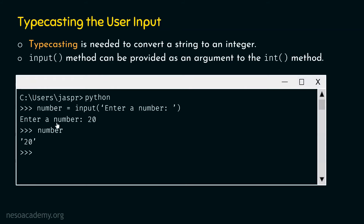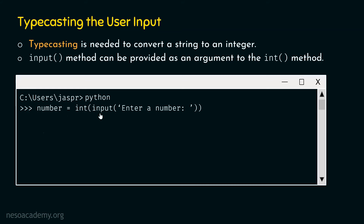Let's see this in action by opening the command prompt. We consider the same example: we were receiving value 20 in the number variable, but it was stored as string 20, not integer 20. We can avoid this by passing input method directly to int method — so our command is: number equal to int(input('enter a number')). As soon as we hit enter, we get 'enter a number'. We type 20 and hit enter, then type number and hit enter — we get 20. Now number is pointing to integer 20, not a string, because the value is not wrapped in single or double quotes.